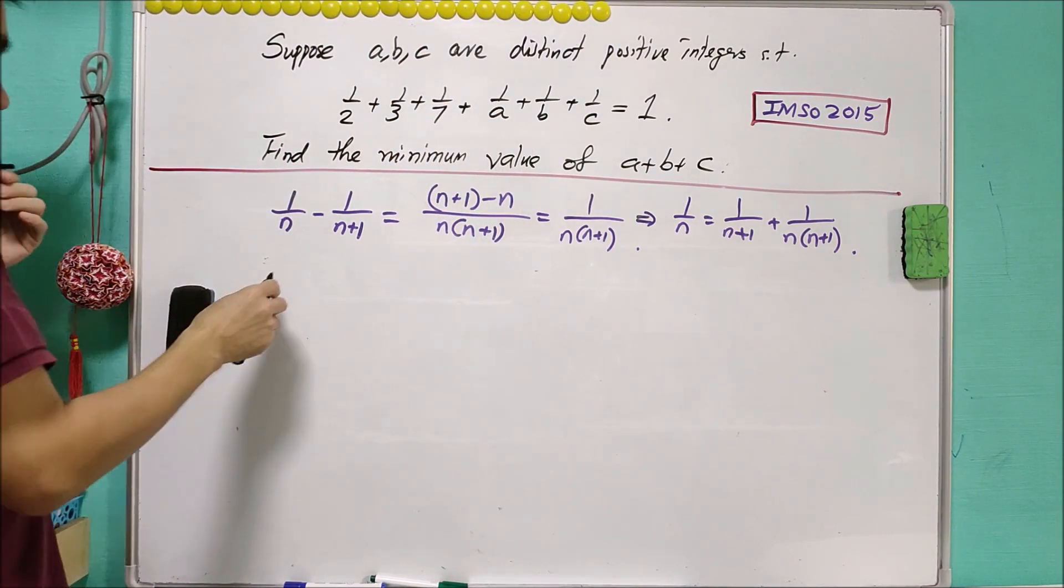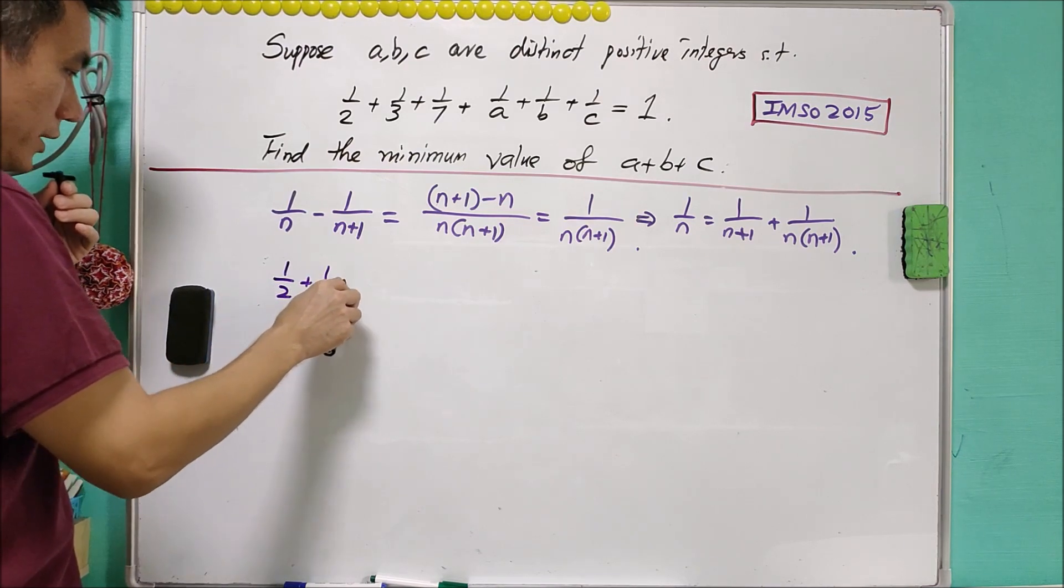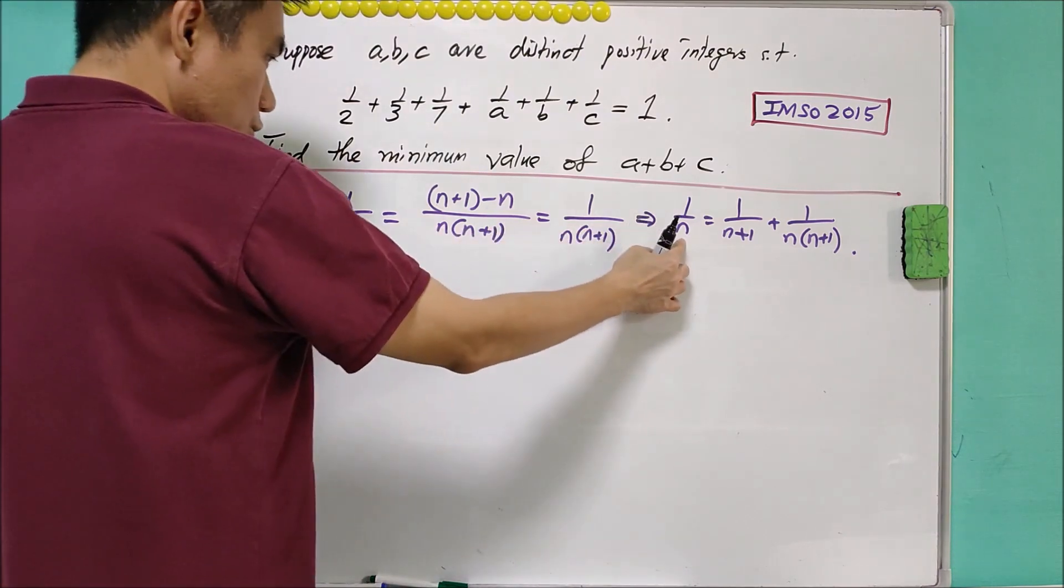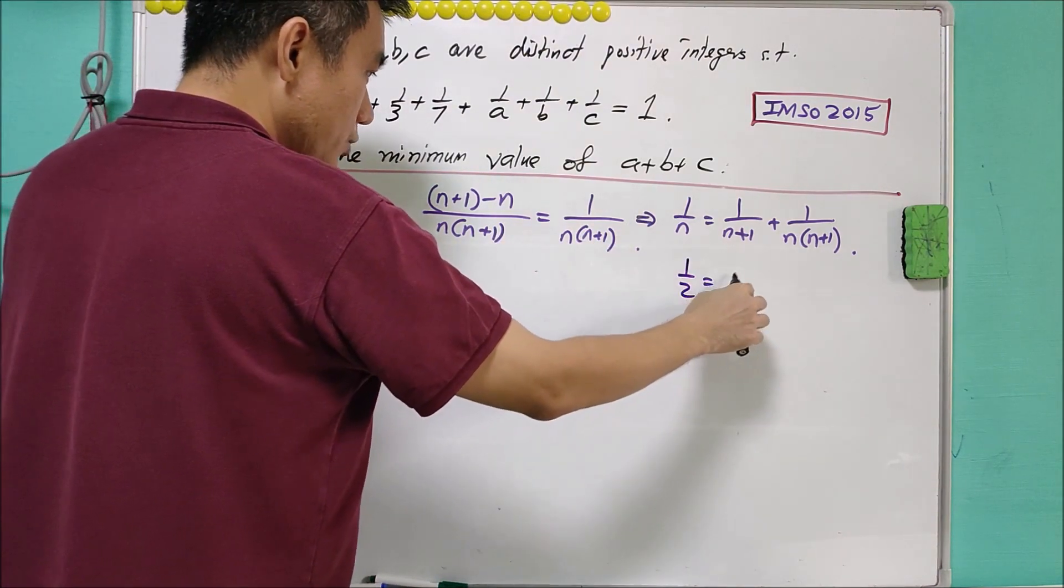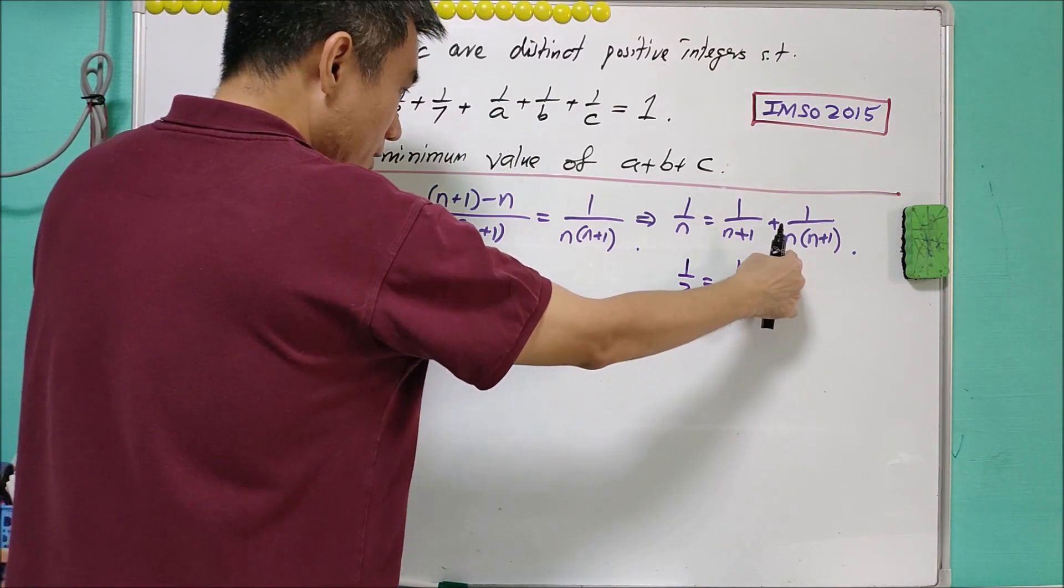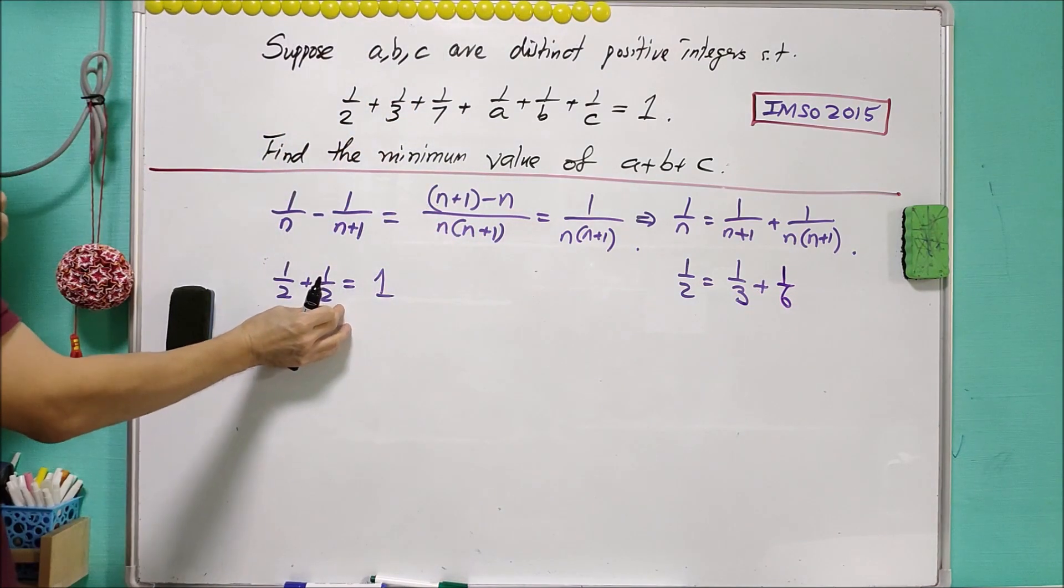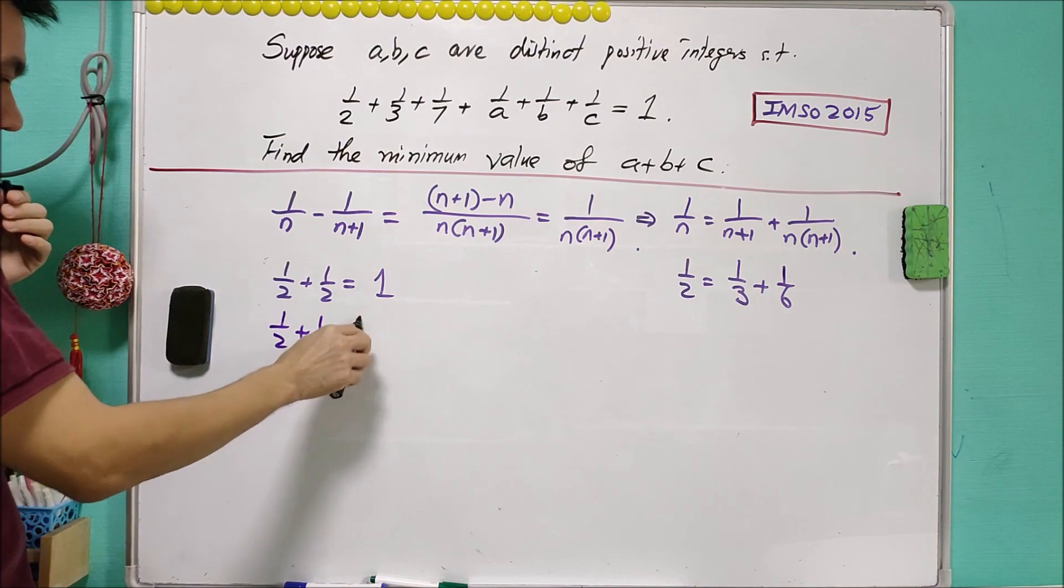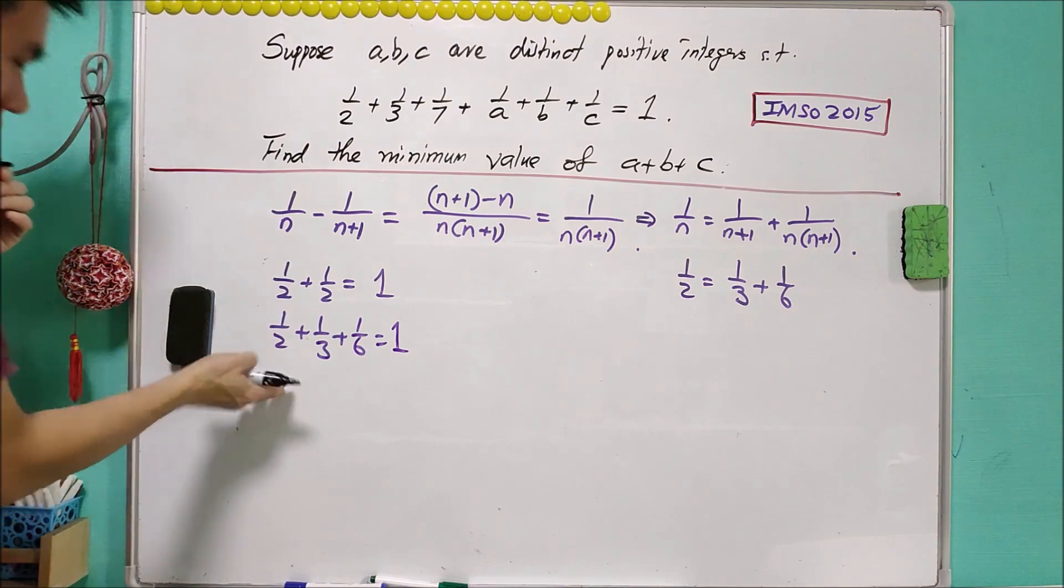First of all, we know that 1 over 2 plus 1 over 2 is equals to 1. We can let N to be 2 and therefore 1 over 2 is equals to 1 over 3 plus when N equals to 2, this is 1 over 6. So we can replace half as 1 over 3 plus 1 over 6. And we have this new equation.